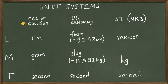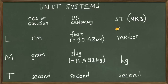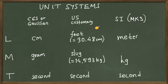For example, in the CGS or Gaussian unit system, all length measurements are done in centimeters, all mass measurements in grams, and all time measurements in seconds. In the SI or MKS unit system, length is measured in meters, mass in kilograms, and time in seconds. The choice of units determines the unit system you are going to use.